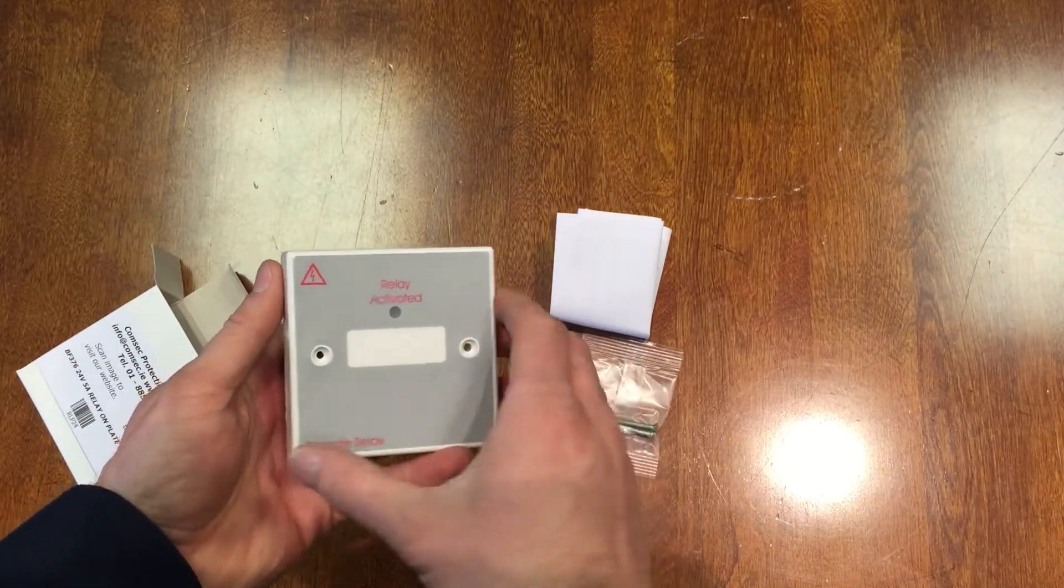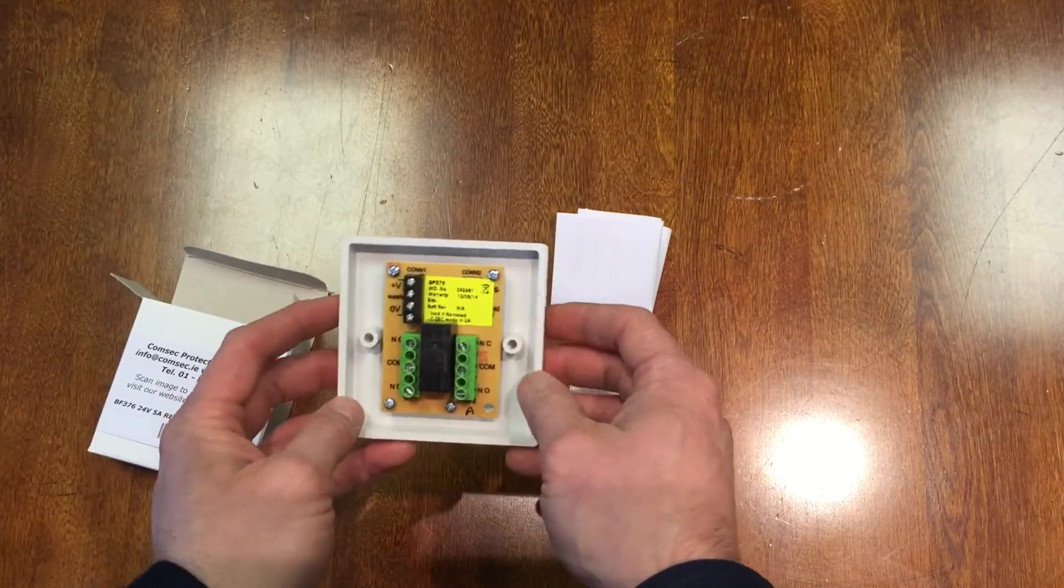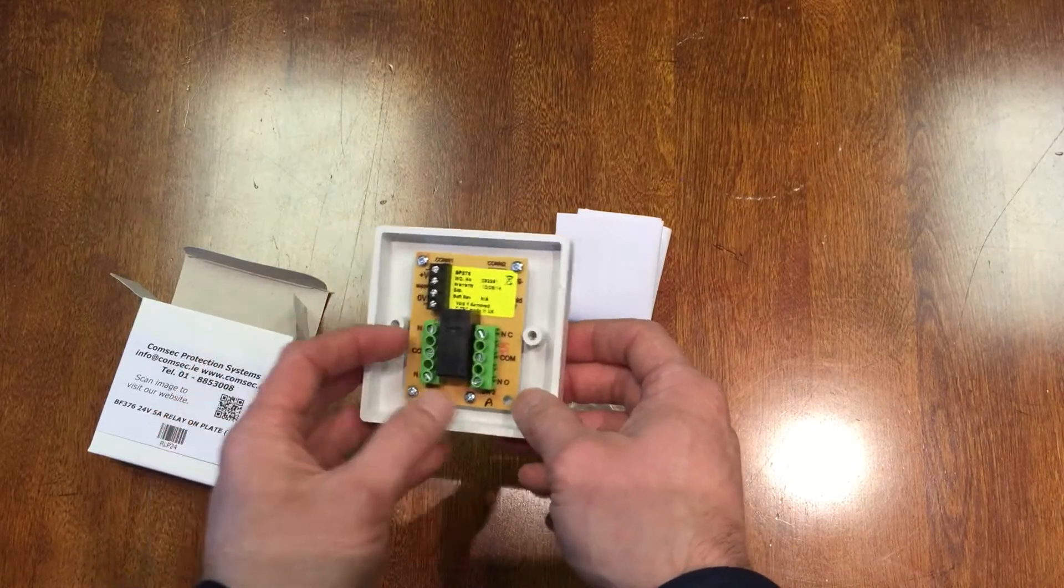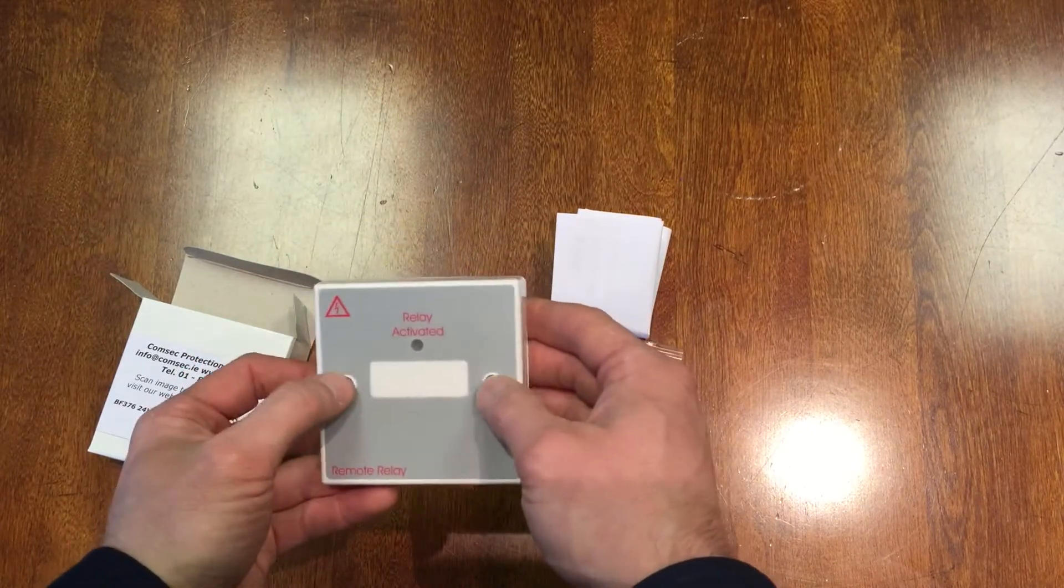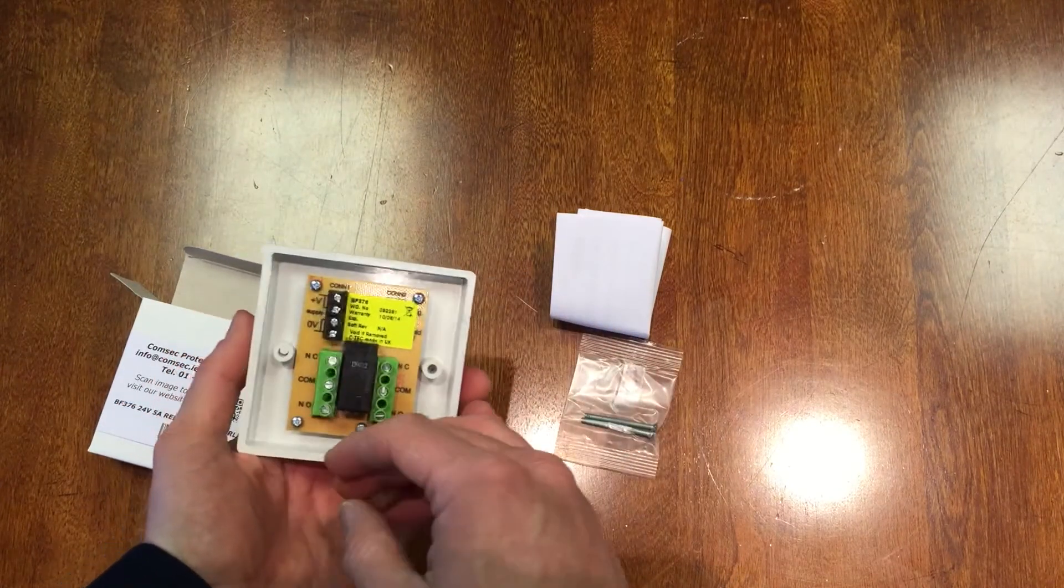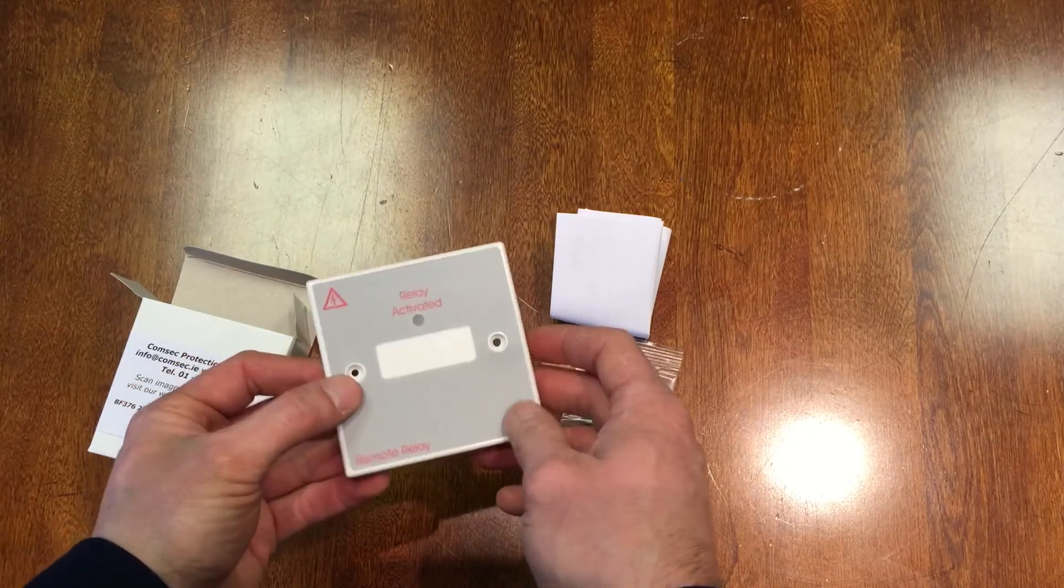We call these the BF376, a 24-volt fire 5-amp relay on a plate, or RLP24. People also call them ancillary relay units, but it's an incredibly useful piece of equipment. It's always handy to have one in the van.